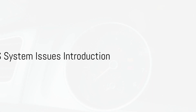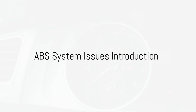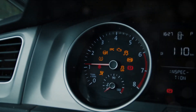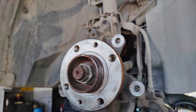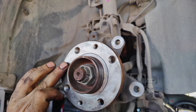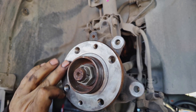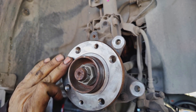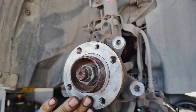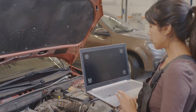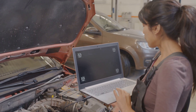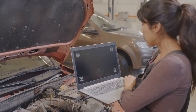Ever wondered what could be causing that persistent ABS light on your dashboard? The ABS, or anti-lock braking system, is crucial for vehicle safety. Issues with it often stem from faulty sensors, worn-out brake pads, or damaged rotors. Now, let's dive into how to diagnose these common ABS system issues.